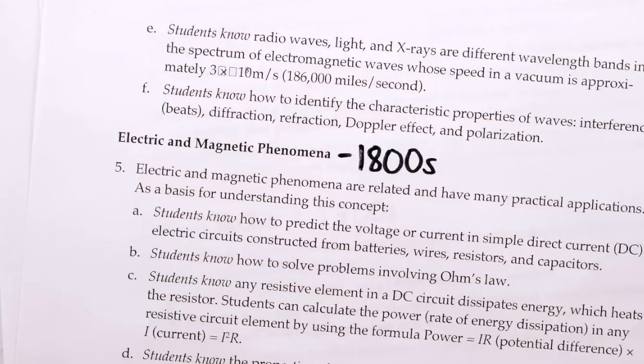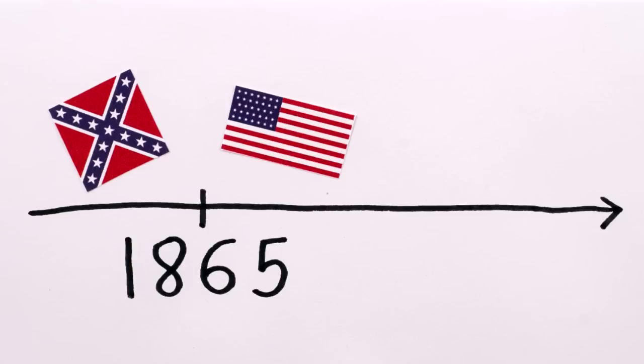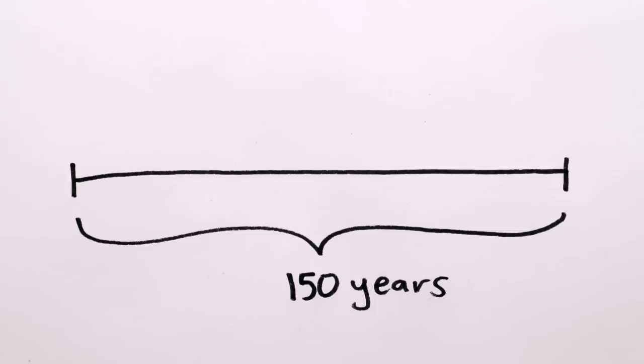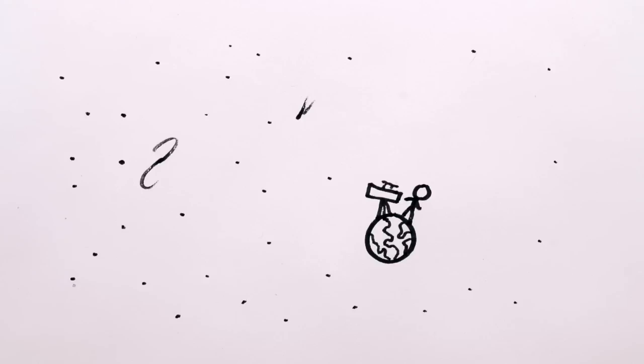That's because high school physics students across most of America are not required to learn about pretty much any physical phenomena discovered or explained more recently than 1865. Yes, 1865. That's the year the civil war ended, and well over a decade before Albert Einstein was even born. You know what can happen in 150 years, Mr. President? A lot.